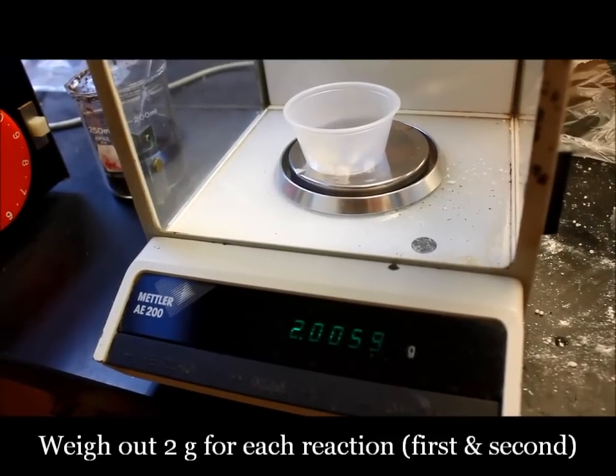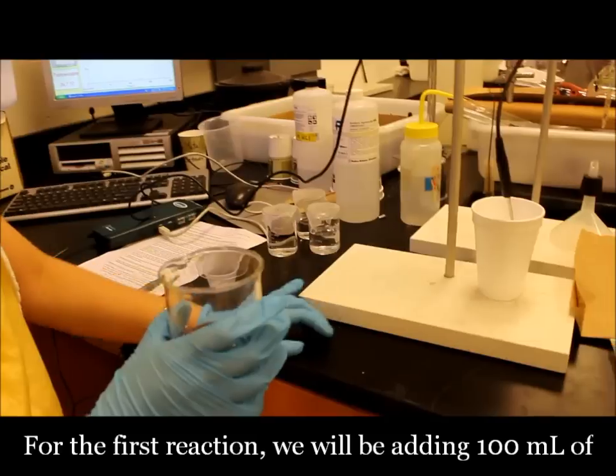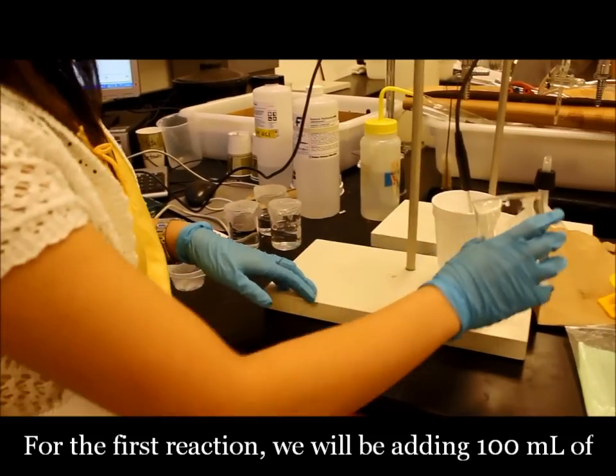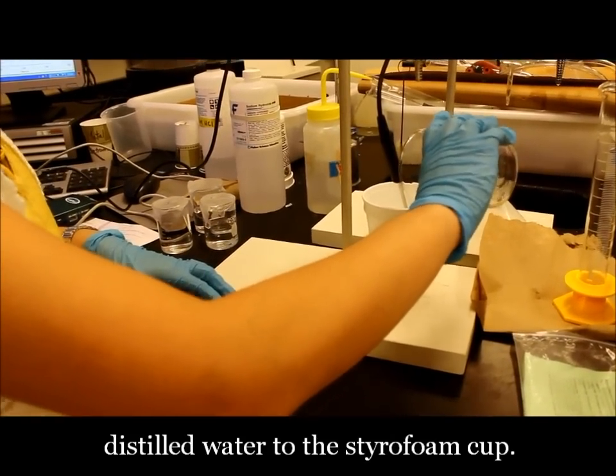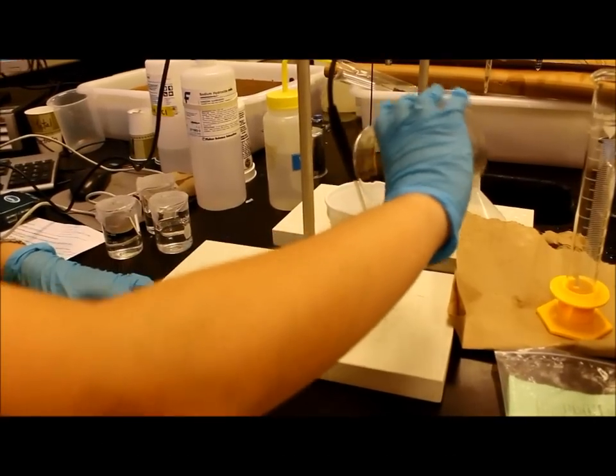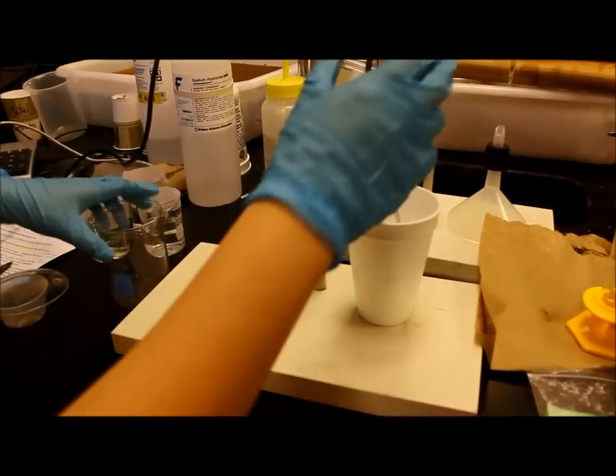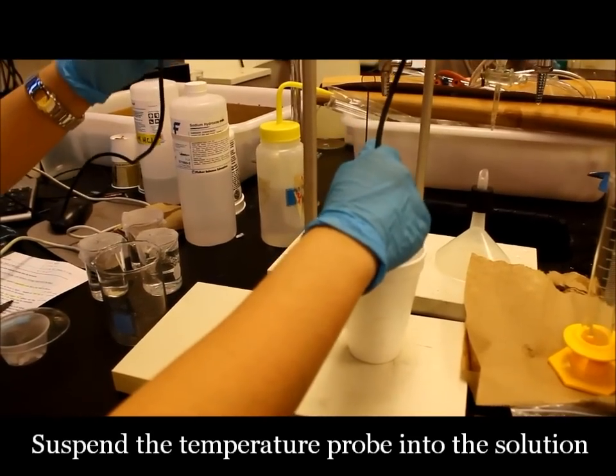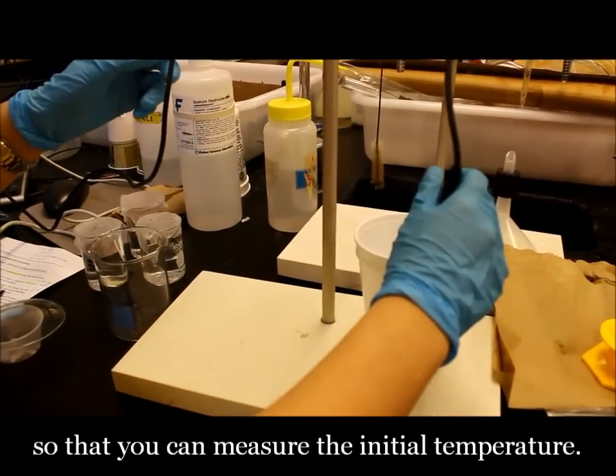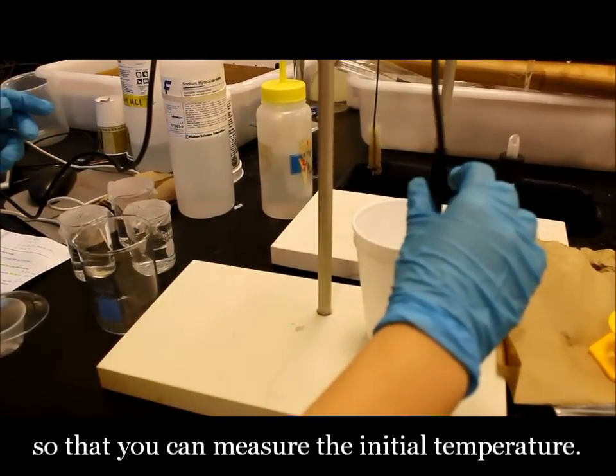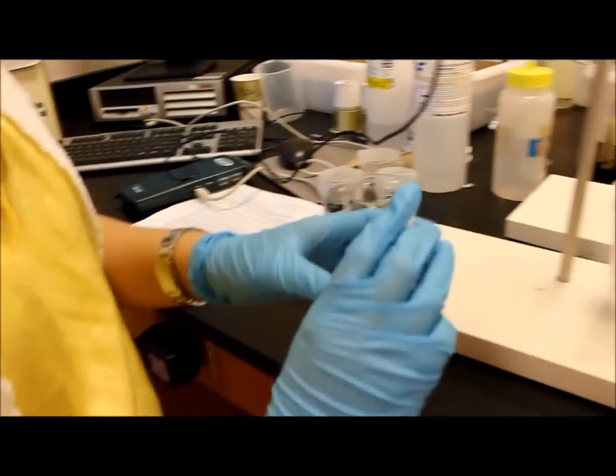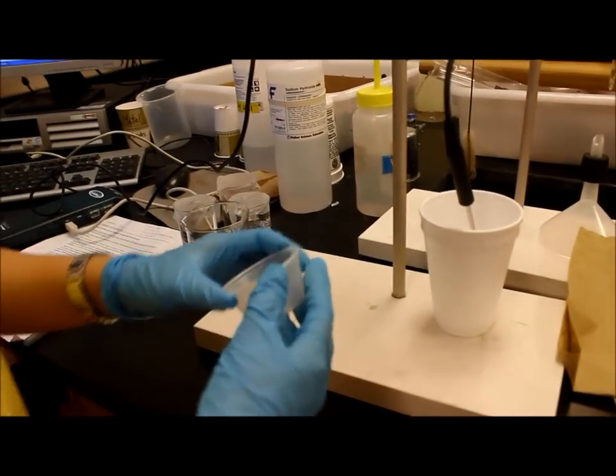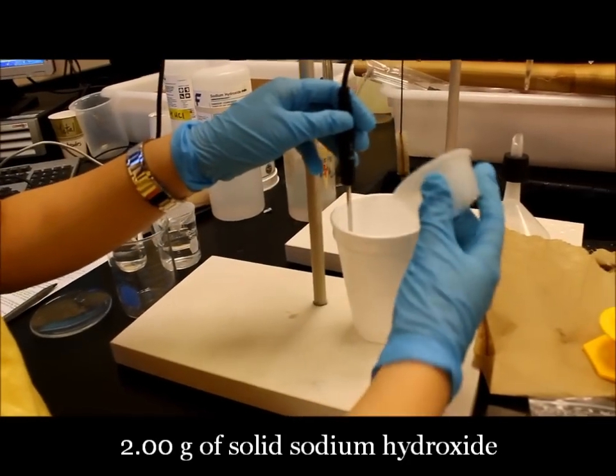Here we have 2 grams of solid sodium hydroxide. So for the first reaction, we're going to add 100 milliliters of distilled water to the styrofoam cup and suspend the temperature probe into the solution so that you can measure the initial temperature. And then we're going to add the 2 grams of solid sodium hydroxide.